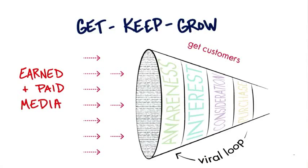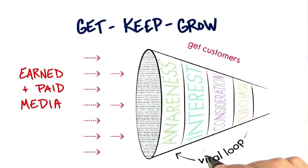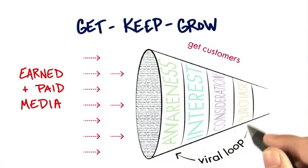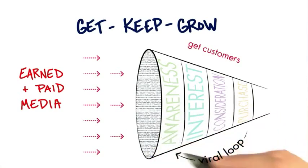In a world where basically all you do is create demand on the left side of the funnel, and somebody purchases on the right, you could kind of measure how much it costs to do that. We'll talk about customer acquisition costs a little later, but there's a little magic accelerator on the bottom of these funnels, and that's called the viral loop.